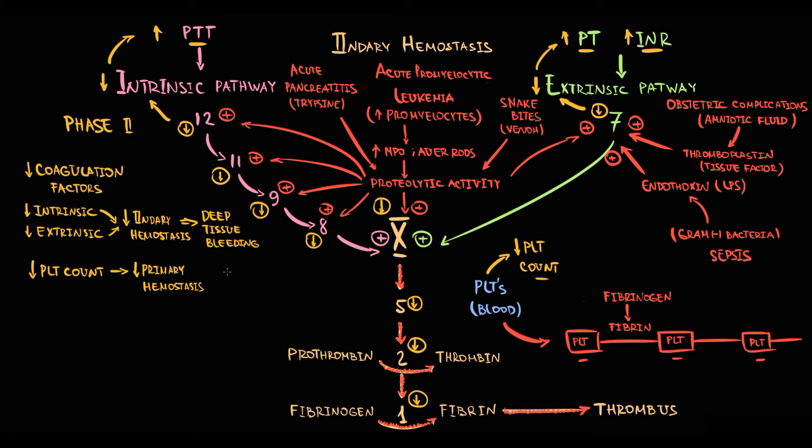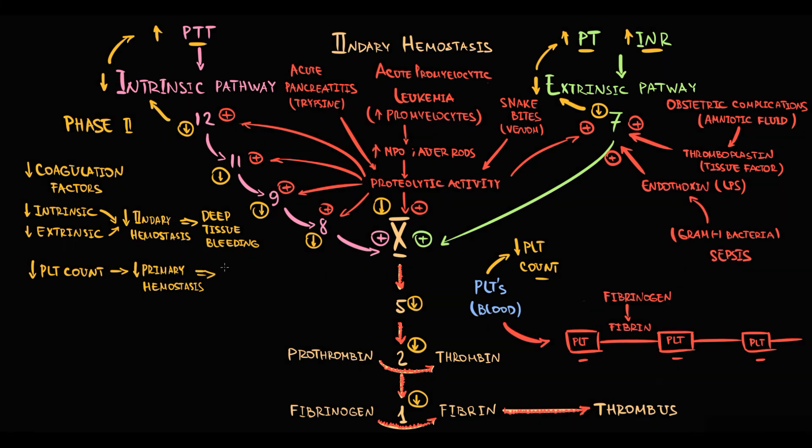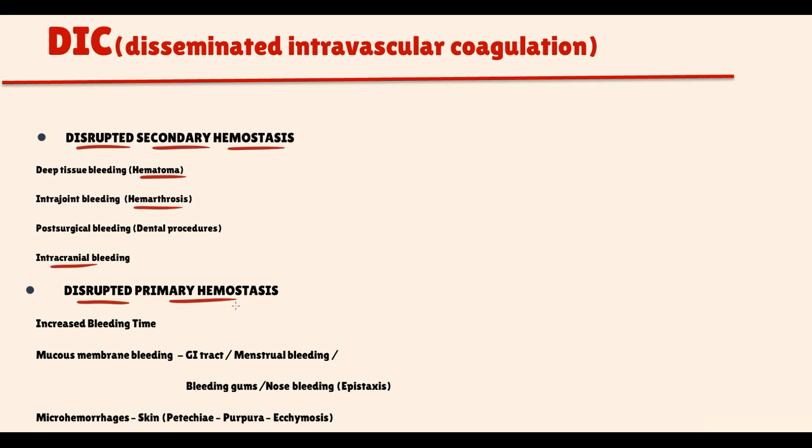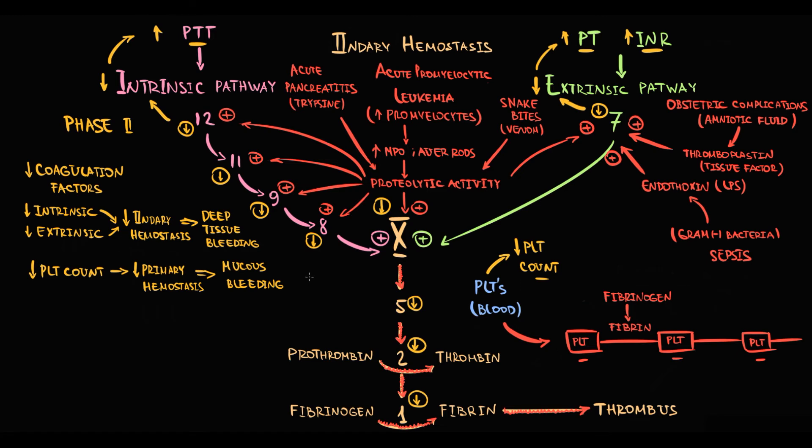Disruption of primary hemostasis will manifest with prolongation of the bleeding time. Also because primary hemostasis is not working properly, this will manifest with typical mucous type of bleeding. In DIC mostly it's bleeding from mucous sites and microhemorrhages. Both primary and secondary hemostasis are not working properly. Because of that, blood is even oozing from puncture sites.